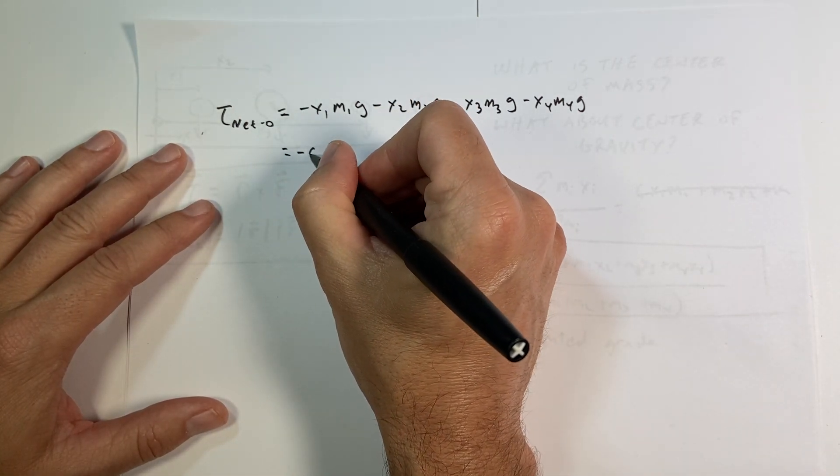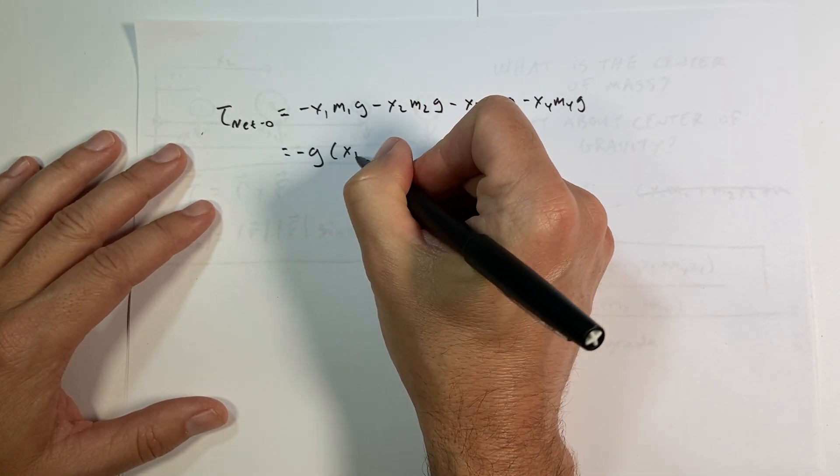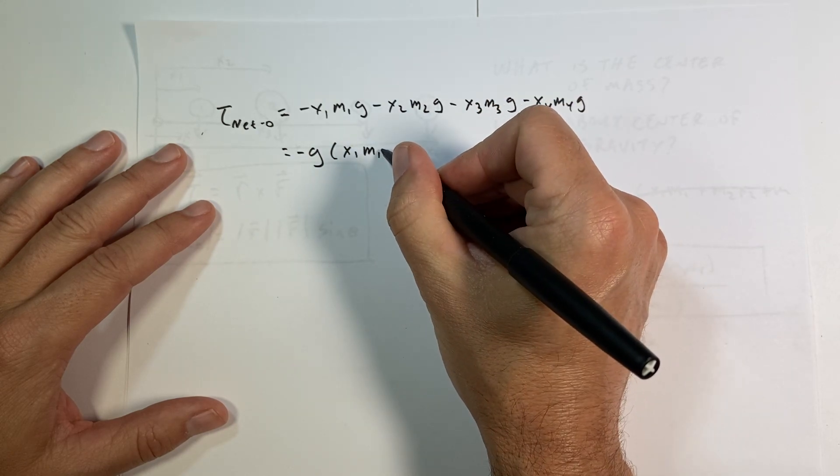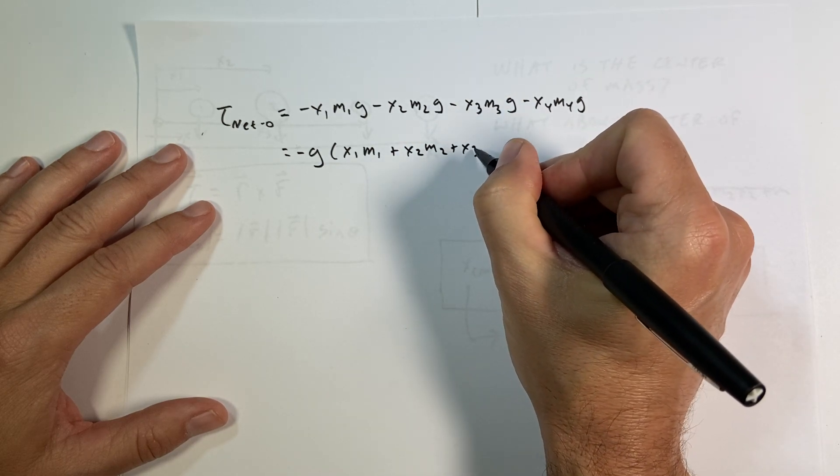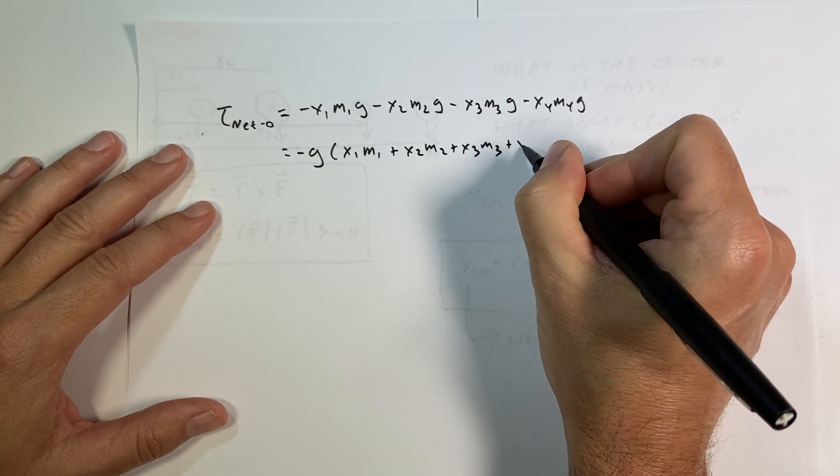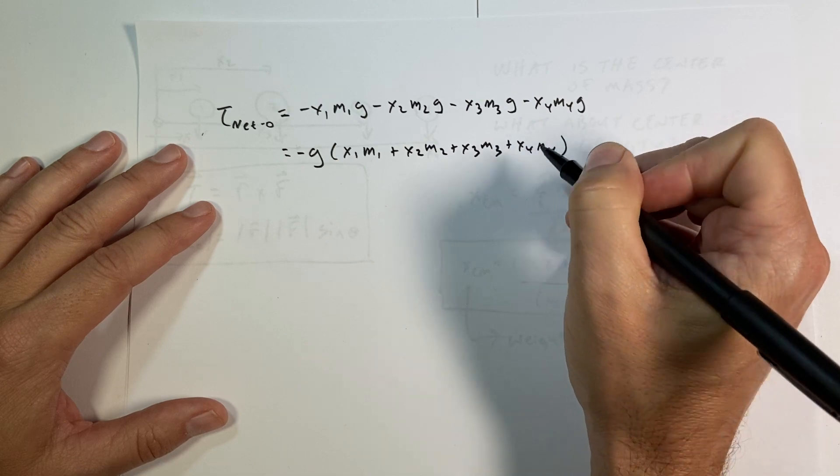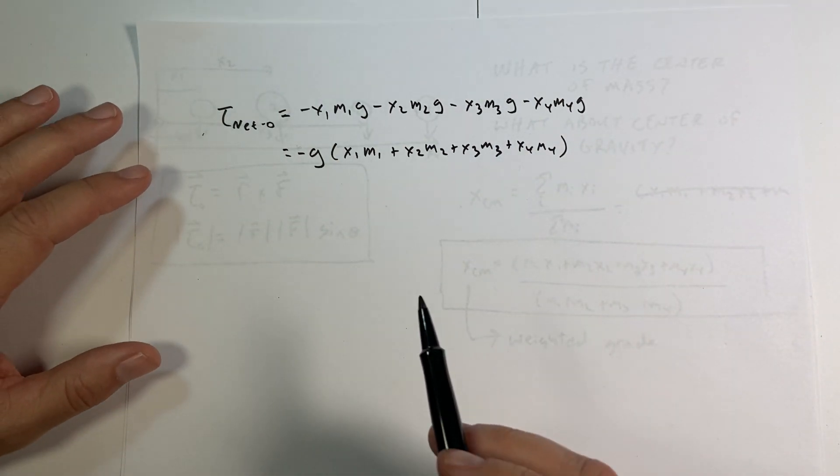Of course, I can factor out the g. So I get, let's put negative g times x1 m1 plus x2 m2 plus x3 m3 plus x4 m4. And you might see that looks a little familiar, right?